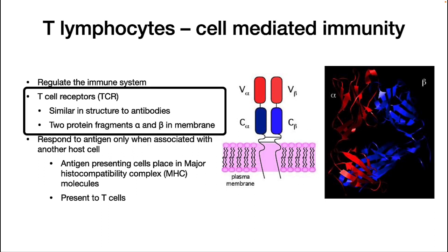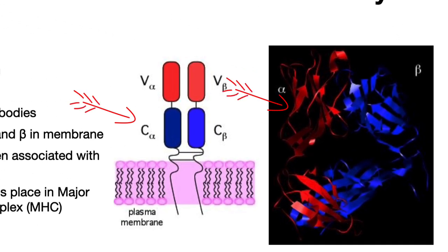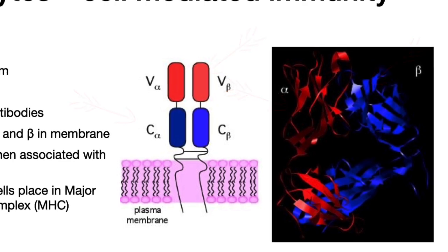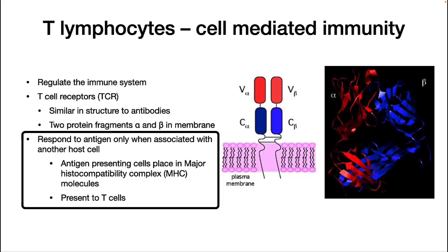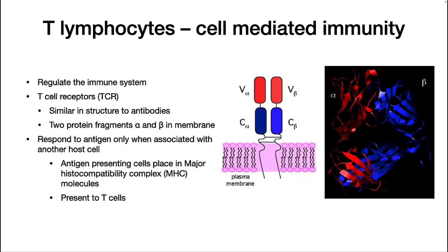The T cell receptor is similar in structure to antibodies in that it has a variable region and a constant region. There are two protein fragments: an alpha chain and a beta chain. However, unlike antibody receptors, they will respond to antigen only when associated with another host cell. This antigen-presenting cell will place the antigen in a major histocompatibility complex, which I will call MHC, and present it to the T cell.